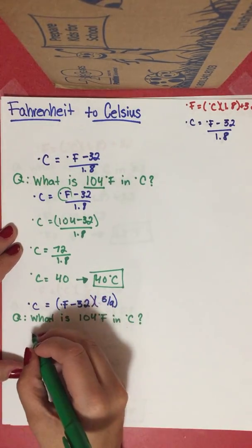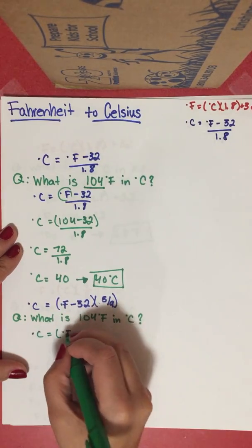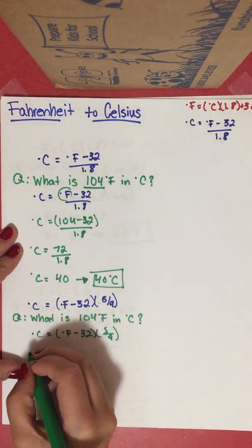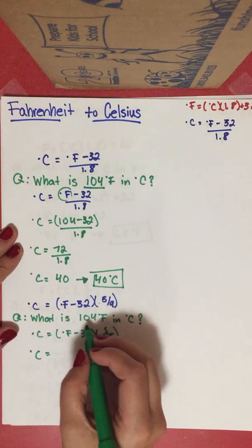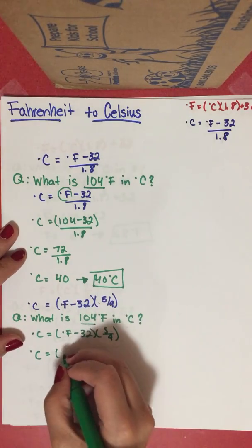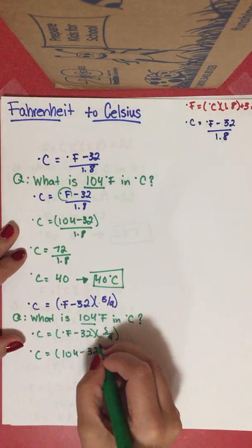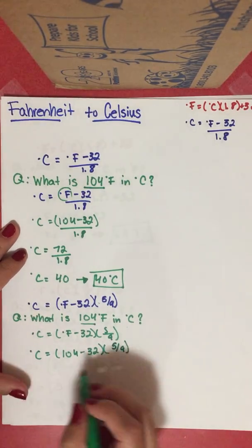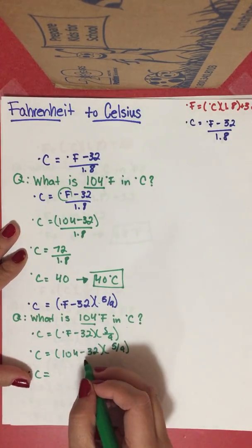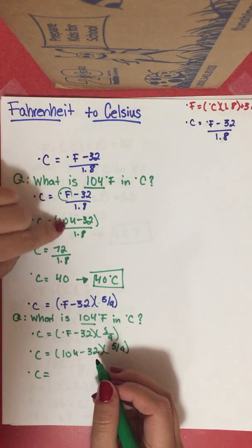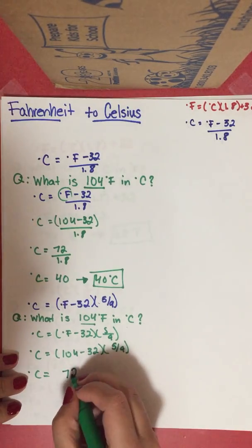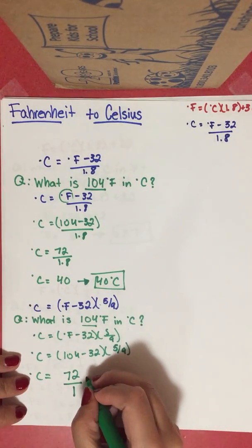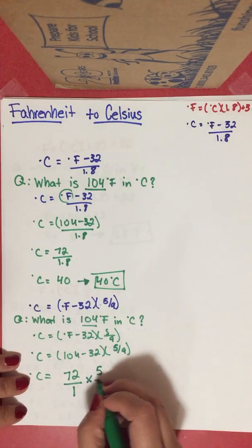So degrees Celsius equals degrees Fahrenheit minus 32 times 5 over 9. Degrees Celsius equals 104 minus 32 — which is 72 — times 5 over 9. Since 72 is a whole number, we write it as 72 over 1, then multiply by 5 over 9.